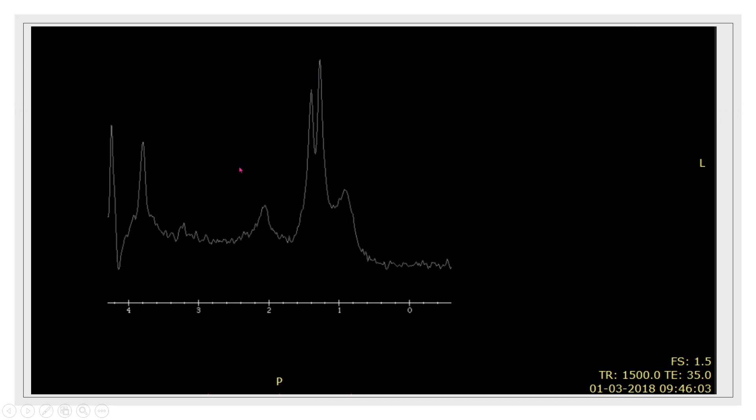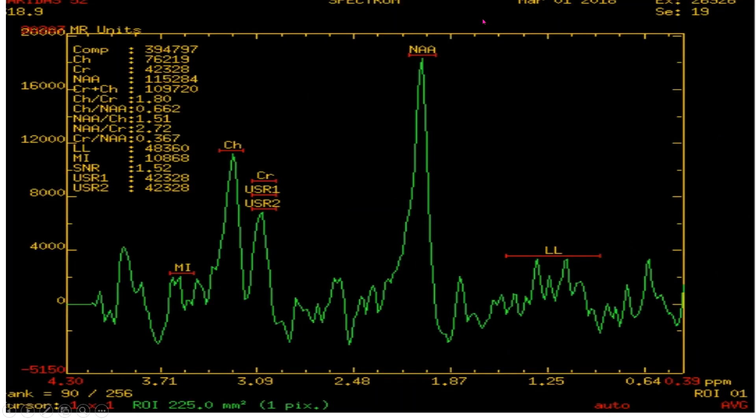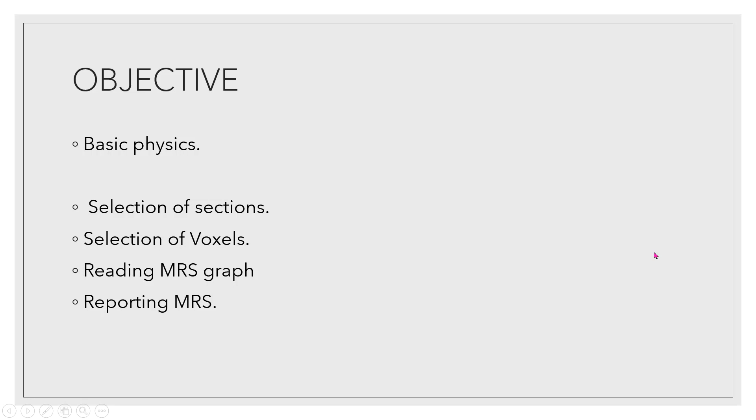This one here represents an acquisition of a histogram using a low TE technique which is TE of 30 milliseconds, and this one represents another technique using a higher TE value with multi voxel acquisition. This is a single voxel graph, this is a multi voxel graph. Right now everybody will be having doubts - what is single voxel, multi voxel, what are the TE and other parameters, how do you interpret this graph? The objective of today's evaluation is to teach you regarding the basic physics of acquisition, explain low TE versus high TE acquisition, selection of sections, single voxel versus multi voxel, and finally the reading and reporting of MRS. That part we will cover in the second part of the videos which will come later.